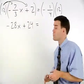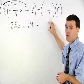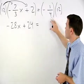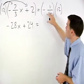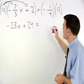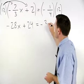And on the right, when multiplying 12 times negative 1 fourth, the 12 and 4 reduce to 3 and 1. So we have negative 1 times 3, which is negative 3.